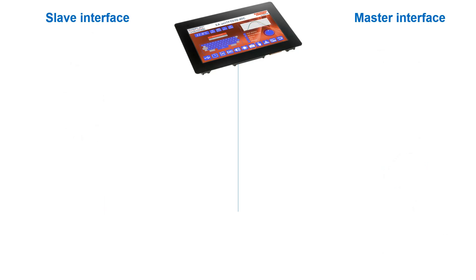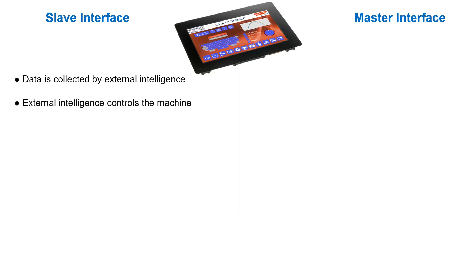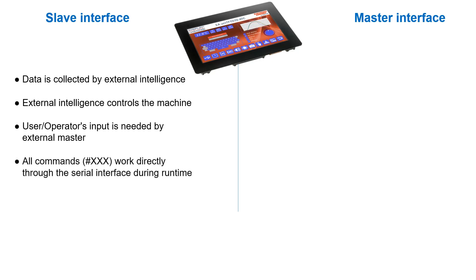To summarize: the UniTFT is used as slave if data is collected by external intelligence which also controls the machine. The UniTFT is needed to visualize the status of the machine and sends user input like changed machine parameters to the external master. The external master can use all commands during runtime, like the #SSC command to change a string on the screen.